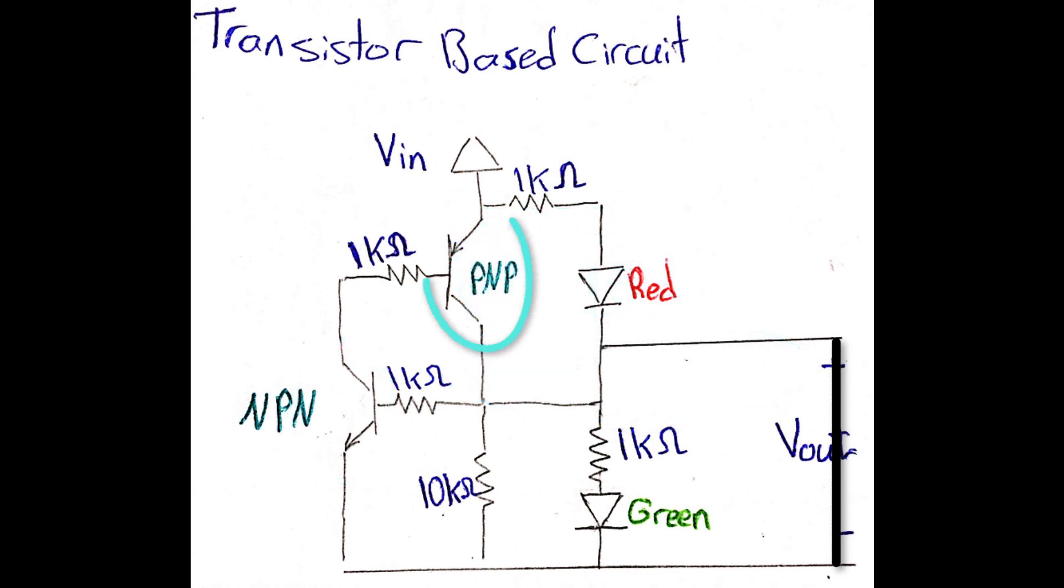On the other hand, the PNP transistor won't be derived to ground anymore, so it will be turned off as well.